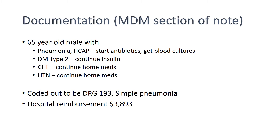Your documentation in the medical decision-making section of the note could look something like this: '65-year-old male with pneumonia, comma HCAP, start antibiotics, get blood cultures. Diabetes mellitus type 2, continue insulin. CHF, continue home medications. Hypertension, continue home medications.' This would likely be coded as DRG-193, simple pneumonia, and the hospital reimbursement for this is about $4,000.